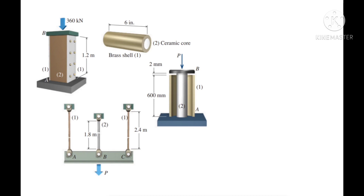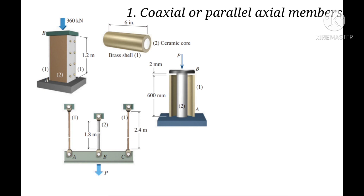This topic is about the geometry of deformations for typical statically indeterminate axial structures. For the first case, we have coaxial or parallel axial members. Problems in this category include side-by-side plates, a tube with a filled core, a concrete column with embedded reinforcing steel, or three parallel rods symmetrically connected to a rigid bar.